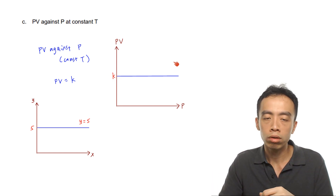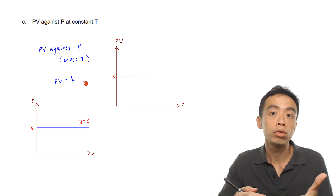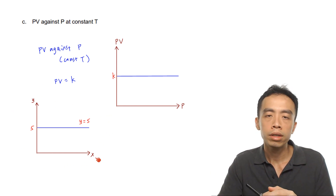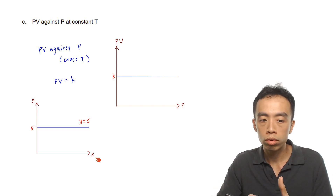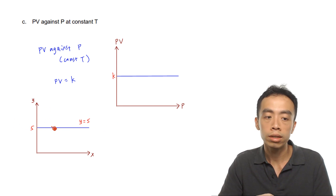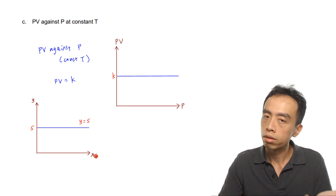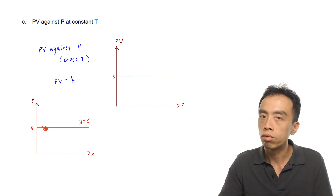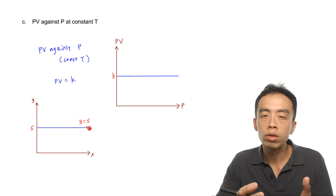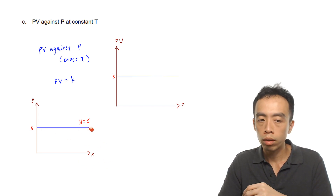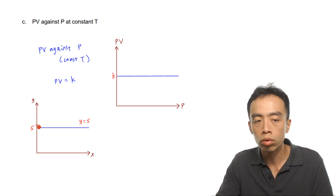This might seem confusing since PV equals a constant doesn't look like y equals mx. Consider this simple example: if you plot y equals 5, that's just a horizontal line cutting the y-axis at 5, because regardless of x — whether x is 0, 1, 10, or 100 — y is always 5.